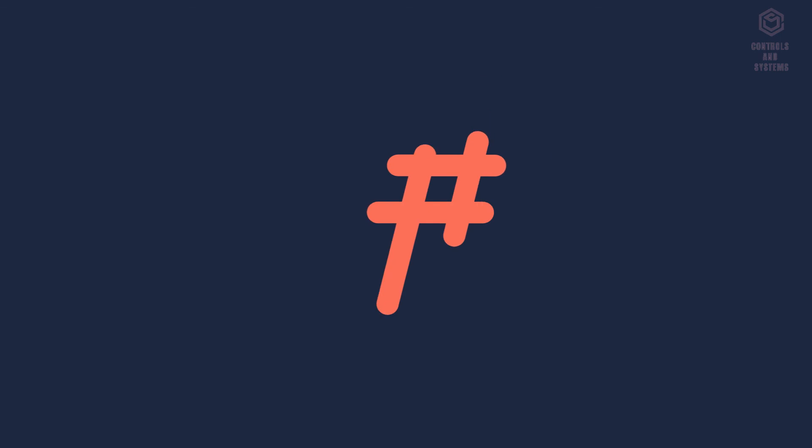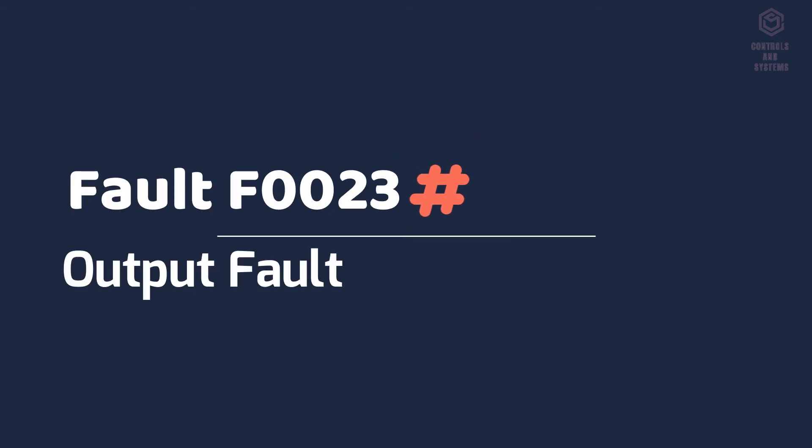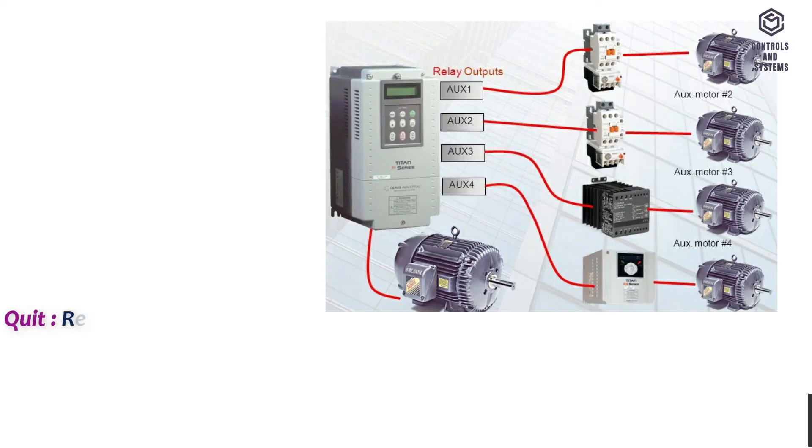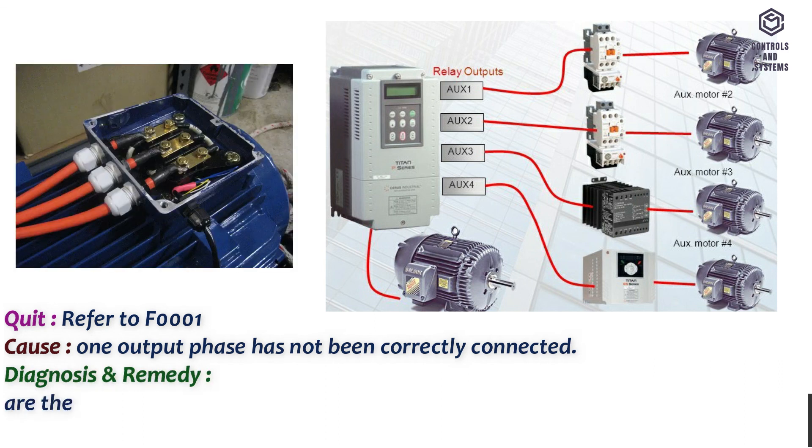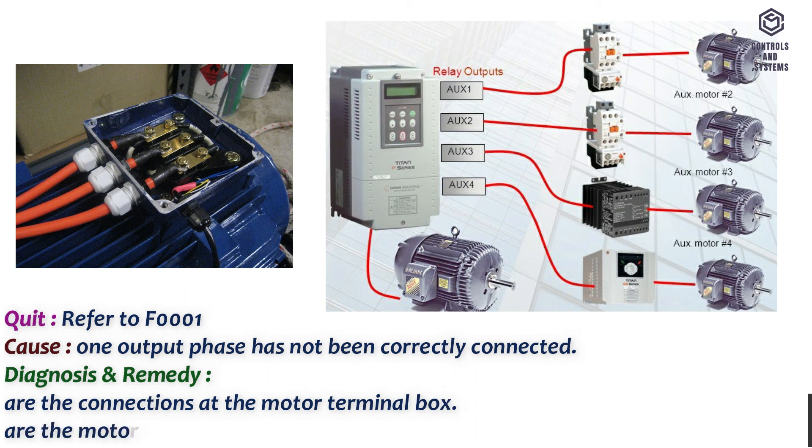Fault F0023 output fault. Quit: refer to F0001. Cause: one output phase has not been correctly connected. Diagnosis and remedy: Are the connections at the motor terminal box? Are the motor cable connections at the inverter?